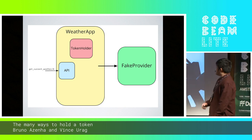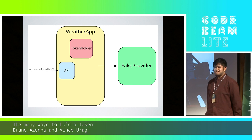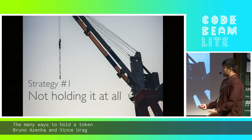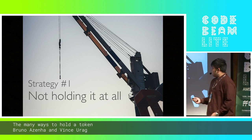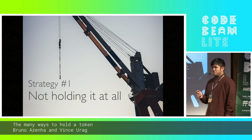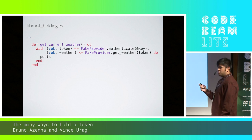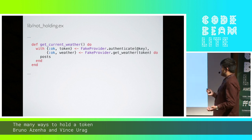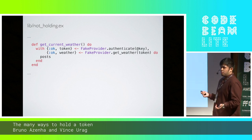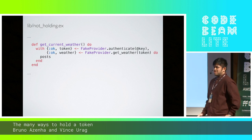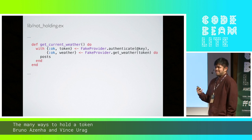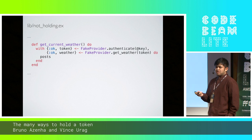The first strategy is not holding at all. Because the title of this talk is about holding a token, the first strategy is not holding it. Holding a token is actually an optimization, so you may or may not need it at all. Every time we get the weather from the provider, we need to authenticate, pass in the credentials, get the token, then ask the provider for the current weather. The drawback is the provider would probably hate you because you're doubling the number of requests you make.